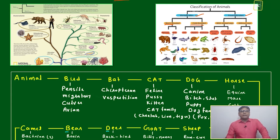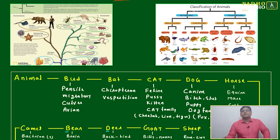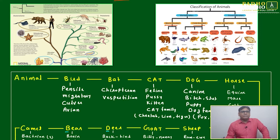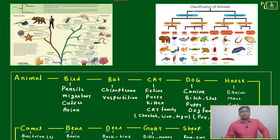Warm-blooded and cold-blooded — again mammals and fish. Based on this chart we can understand classification of the animal kingdom: vertebrates and invertebrates, then warm-blooded and cold-blooded. Warm-blooded includes mammals and birds; cold-blooded includes fish, reptiles, and amphibians. For invertebrates, the major classification is with jointed legs and without jointed legs.